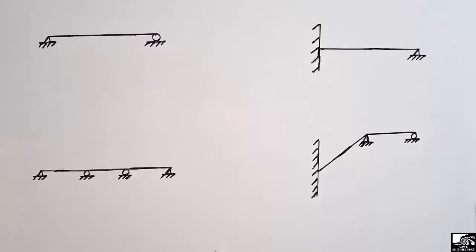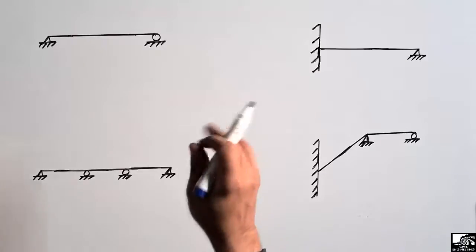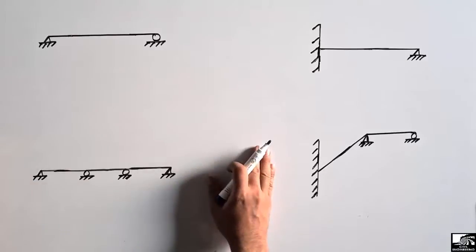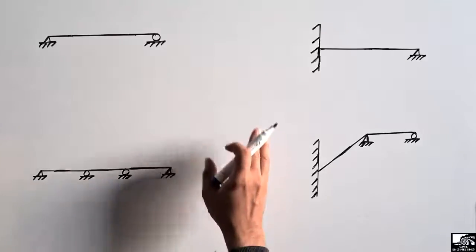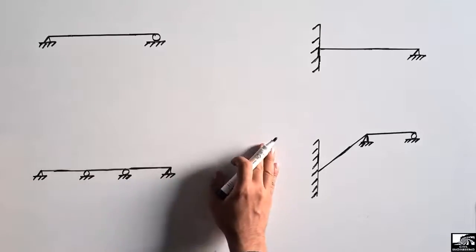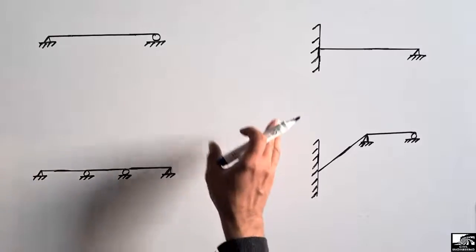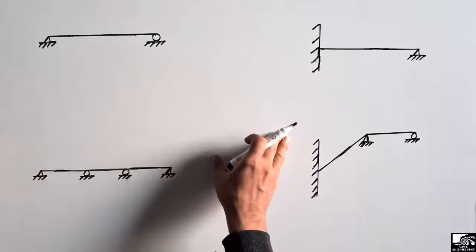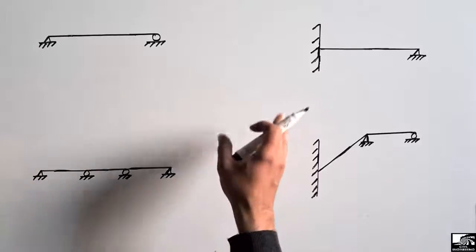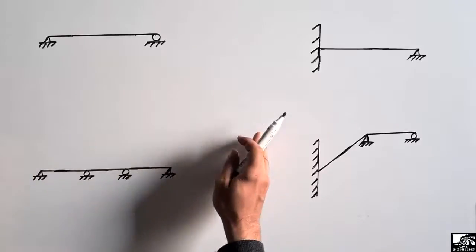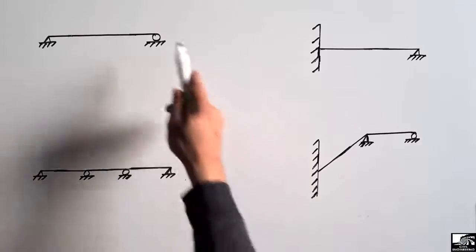Hello guys, welcome back to Usable Engineering YouTube channel. Please subscribe to our channel for daily Usable Engineering videos. Today we are going to find out the determinacy of beams. There are three main types of beams depending on determinacy: the determinant beam, the indeterminate beam, and the unstable beam.